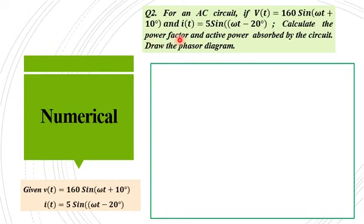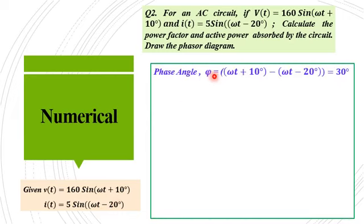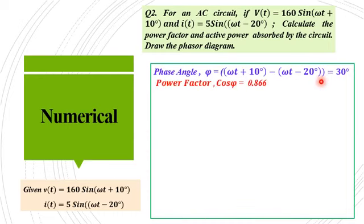The power factor is cos φ, where φ is the angle between the voltage and current. The phase angle φ equals the angle of voltage minus the angle of current, that is (ωt + 10°) minus (ωt − 20°) equals 30 degrees. So φ equals 30 degrees, and the power factor cos φ equals cos 30° equals 0.866.